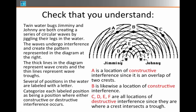But all the others are going to be zones of destructive interference, because that's where a crest is meeting a trough. For example, in location E, it's a crest coming from Johnny's wavefront meeting a trough coming from Jiminy's wavefront.